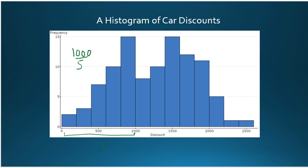equals 200. So each of these bin widths is 200.